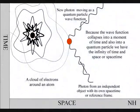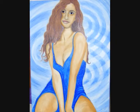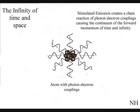Because the wave function collapses into moments in time and also quantum particles, we have the infinity of time and space. In this diagram of an atom surrounded by photon-electron couplings, feedback from other atoms will create sets of infinities.